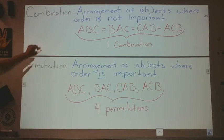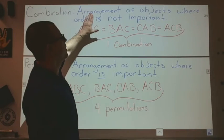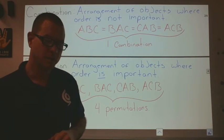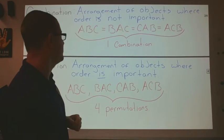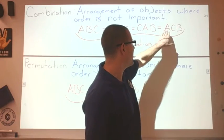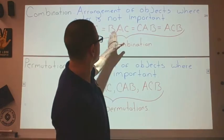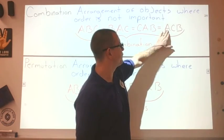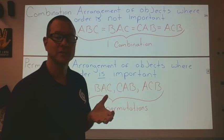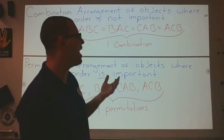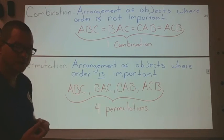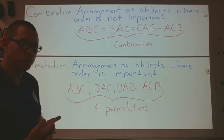A combination is an arrangement of objects when order is not important. Using 3 objects — A, B, and C — you notice A, B, C; B, A, C; C, A, B; A, C, B — even though the order of all of those is different, it would all be a single combination because it has the same elements. In this case, we don't really care how the objects are arranged; we're more interested in what objects we have. So combinations: order is not important.